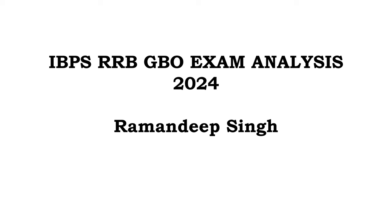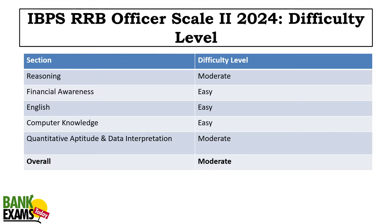Reasoning paper was moderate to difficult — moderate I would say. Financial awareness was as expected. English was kind of easy. Computer awareness was easy as compared to previous years. Computer and English were relatively easy, and quantitative aptitude was doable — it was not difficult. So overall the difficulty level is easy to moderate.